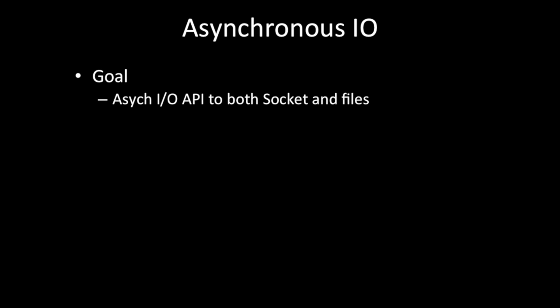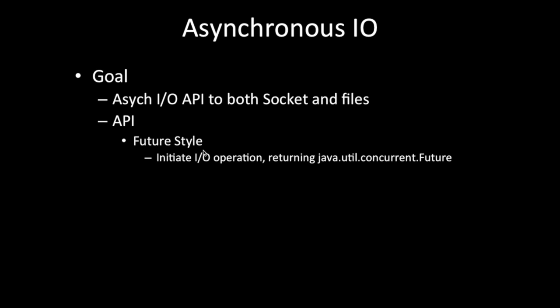In NIO, you use channels and selectors to make I/O asynchronous, which means writing more code and harder debugging. The goal of NIO2 async I/O is to provide an async I/O API for both sockets and files. The API is based on a future style that initiates an I/O operation returning java.util.concurrent.Future, and this Future interface defines methods to test or wait for completion.